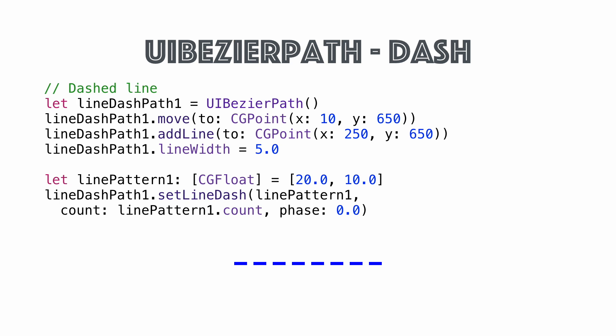You can also apply a dash pattern to a path — it doesn't have to be a straight line, it can be any complex path. A line pattern is an array of CGFloats — on, off, on, off. Here we have 20 points of the line on and 10 points off. It doesn't have to be just two items; you can have a longer array for a more complex pattern — you could even do Morse code. Then you just set that line dash pattern onto the path.